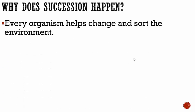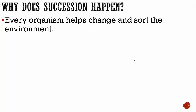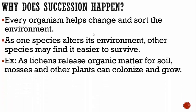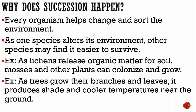So why does succession happen? Every organism helps change and alter the environment. As one species changes its environment, other species may find it easier to survive. For example, as lichens release organic matter into the soil, mosses and other plants can colonize and grow. As trees grow their branches and leaves, they produce shade and cooler temperatures near the ground, so organisms that struggle with too much heat can build their habitats in the shade where it's easier to survive.